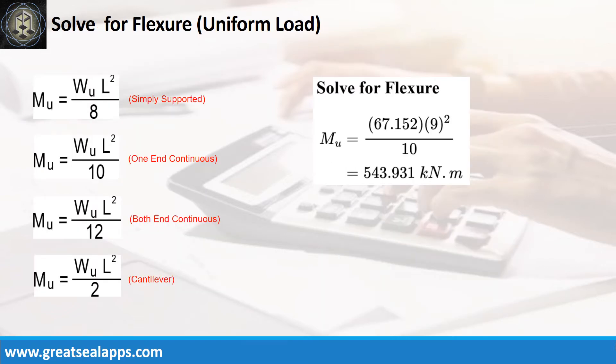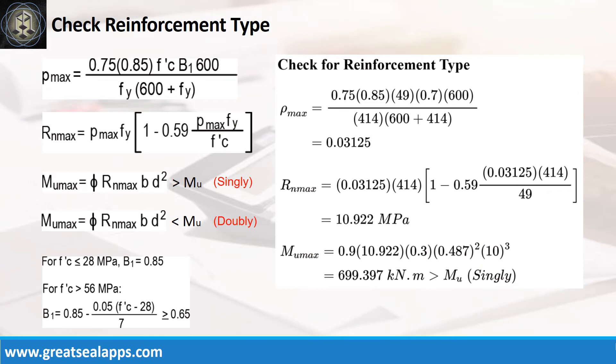Given factored load equals 67.152 kN per meter and L equals 9 meters, the maximum moment is 543.931 kN-m. The rho max from given design criteria is 0.03125, then RN max is 10.922 MPa. And finally, the MU max is 699.397 kN-m, greater than 543.931 kN-m for singly reinforced beam design.